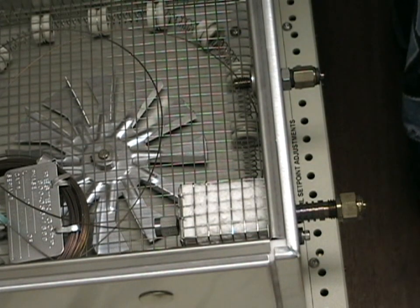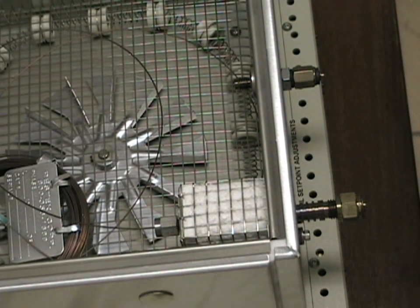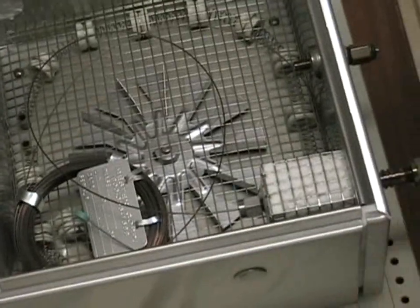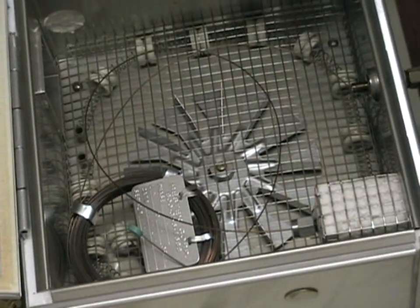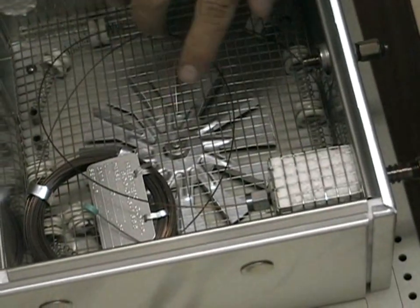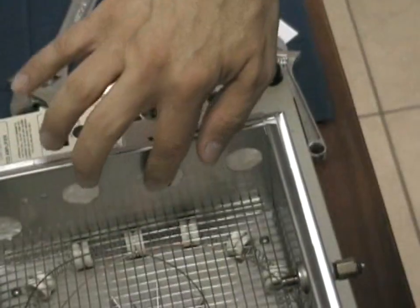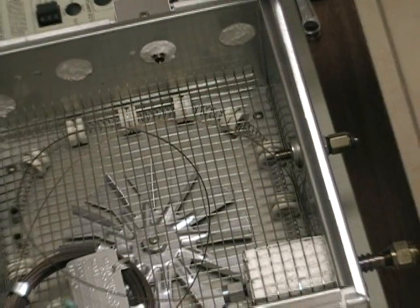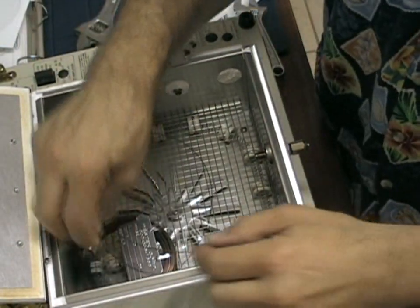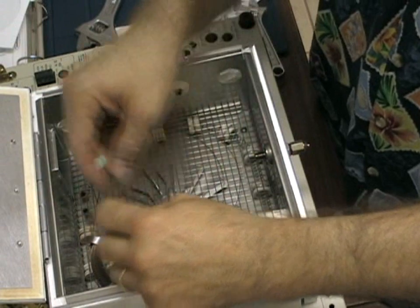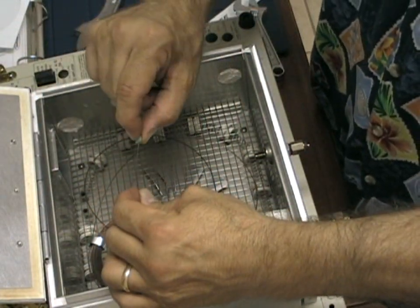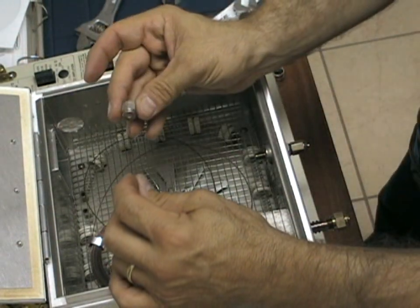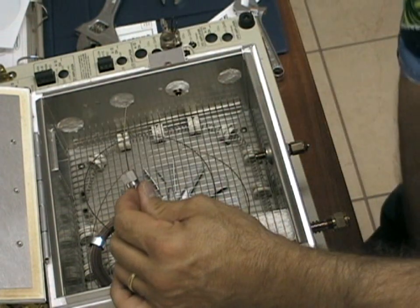Next, we need to connect the outlet end of the GC column to the GC detector. In this case, we're using an FID detector on the opposite side of the GC. Remove the safety cap from the end of the column.